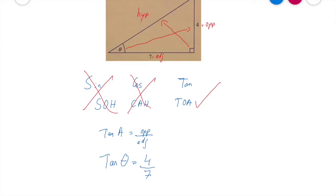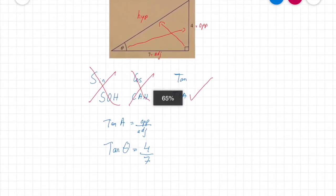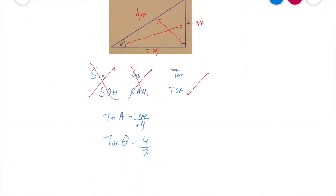What do I do now? Well I need to put this into my calculator now. So I need to go press shift tan, so it's going to be writing tan to the minus one, brackets, four over seven.